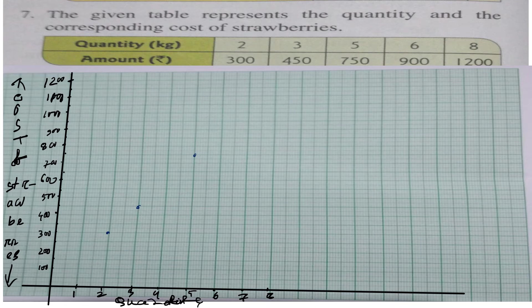Now, opposite to 6 kg, the cost is 900. So 900 is here on the Y-axis, and opposite to 6 kg we mark this point at 900.